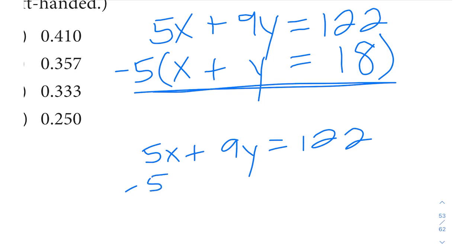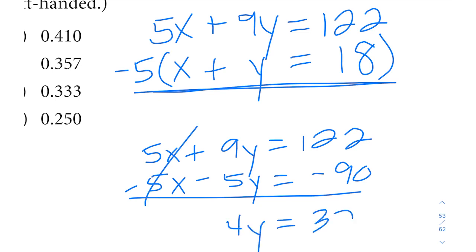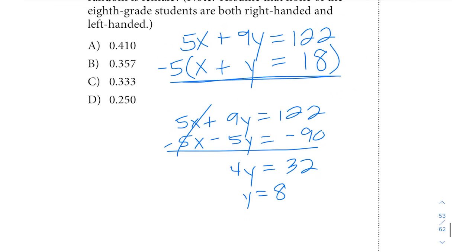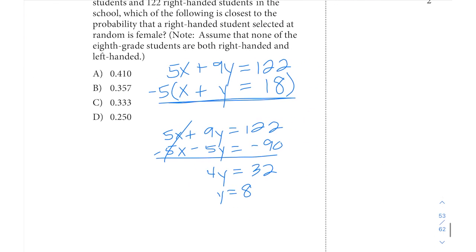Our top equation: 5x plus 9y equals 122. For our bottom equation, if we distribute the negative 5, we get negative 5x minus 5y equals negative 90. The x's cancel, 4y equals 32, divide by 4, y equals 8.